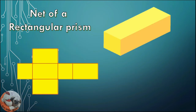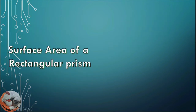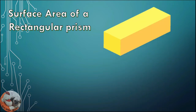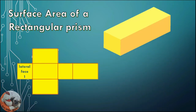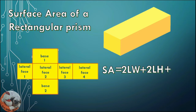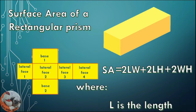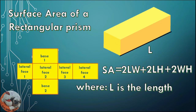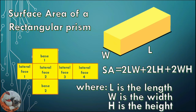This is the net of a rectangular prism. To find the surface area of a rectangular prism, you must find the area of the four lateral faces and the two bases. So surface area equals 2LW plus 2LH plus 2WH, where L is the length, W is the width, and H is the height.